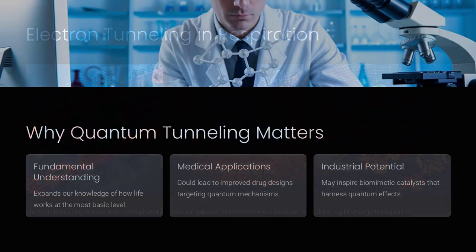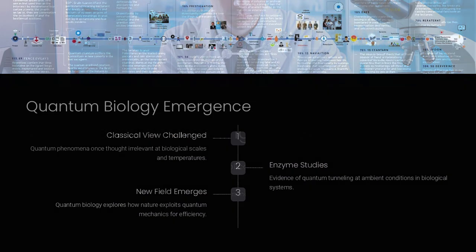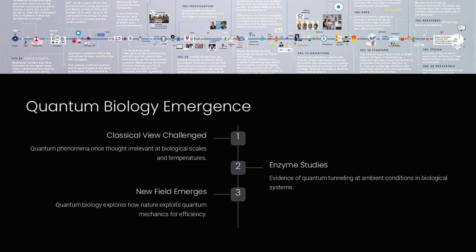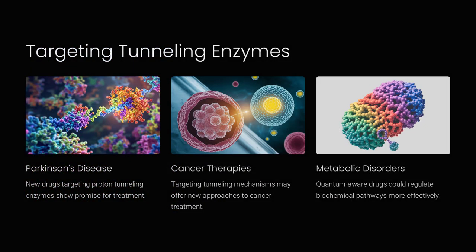For instance, by replacing hydrogen with its heavier isotope, deuterium, in enzyme reactions, they often observe a change in reaction rates that is too large to be explained solely by classical mechanics. This suggests that hydrogen atoms may be tunneling through energy barriers during the reaction.